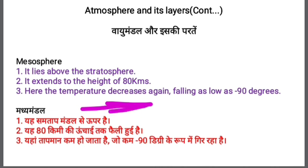In the mesosphere, the temperature decreases again, falling as low as minus 90 degrees centigrade. The temperature is decreasing because the density of air is decreasing. As the density of air decreases, its thickness decreases, due to which it cannot absorb the same amount of heat it was absorbing in the stratosphere — so its temperature decreases.